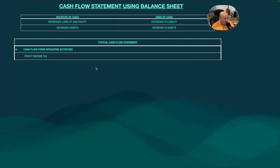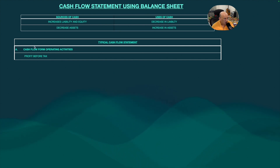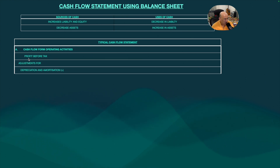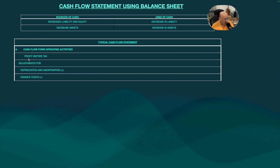First we have profit before tax, which is calculated from the cash flow from operating activities. In order to get cash flow from operating activities from the profit before tax, we have to make some adjustments. Any depreciation and amortization should be added back — that is the first adjustment.